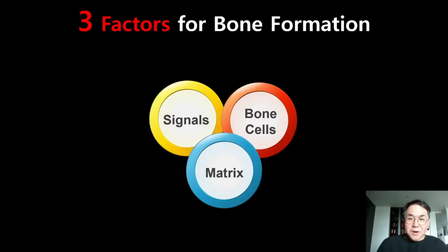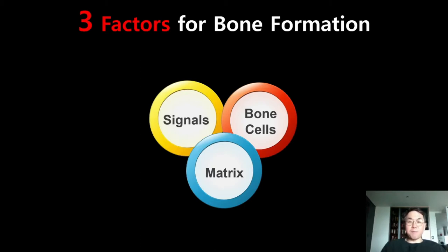So how can we make bone successfully? To make bone, we need three important factors: signals, bone cells, and matrix. Let's talk about these three important factors one by one in detail.